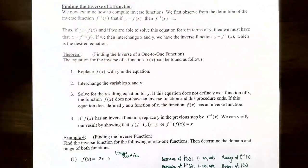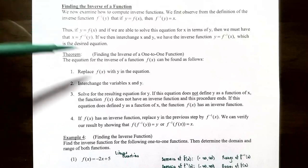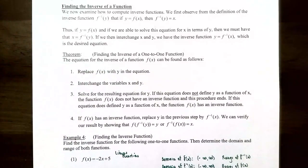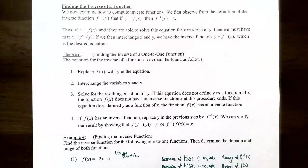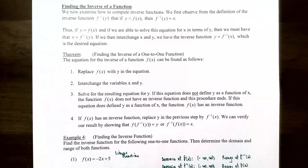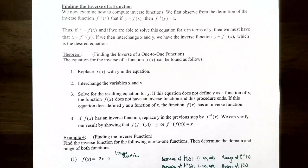The input variable is still going to be x for the inverse function and the output will be y. Here's the theorem for finding the inverse of a one-to-one function. Step one: replace the function notation f of x with y, so you only have variables x and y in the equation. Step two — the important step — interchange the variables x and y, so x is now the output variable and y is now the input variable. Step three: solve the resulting equation for y. After interchanging, the equation will be x equals a function of y, so solving for y gives you the inverse function. If solving for y does not define y as a function of x, the inverse doesn't exist and the procedure ends.